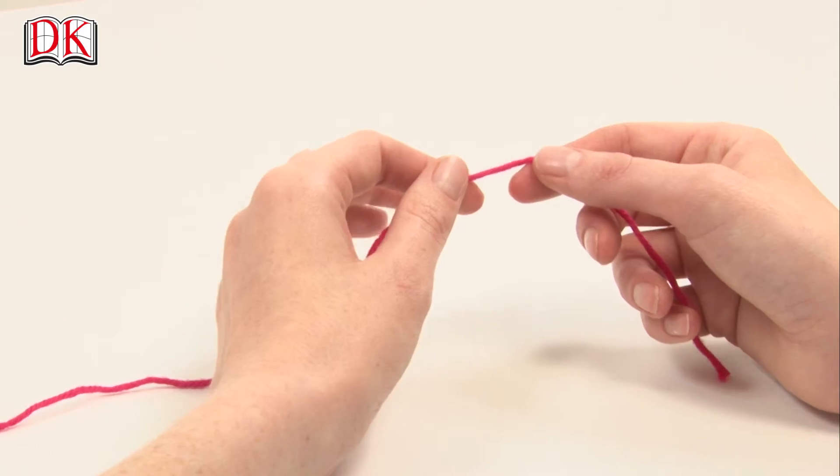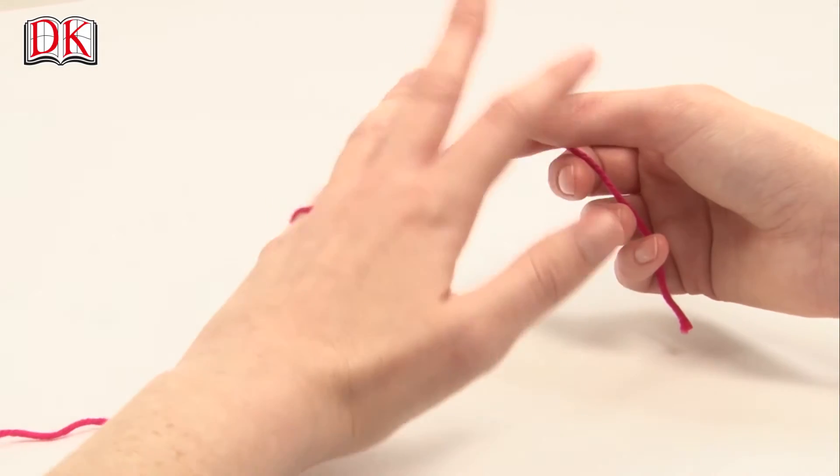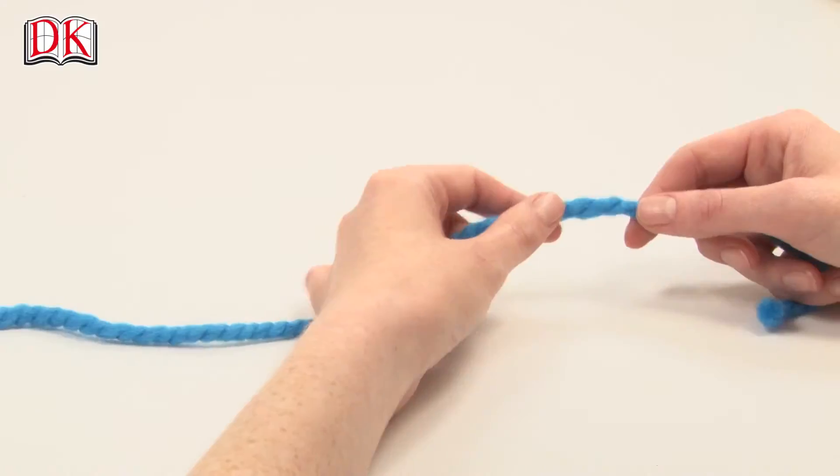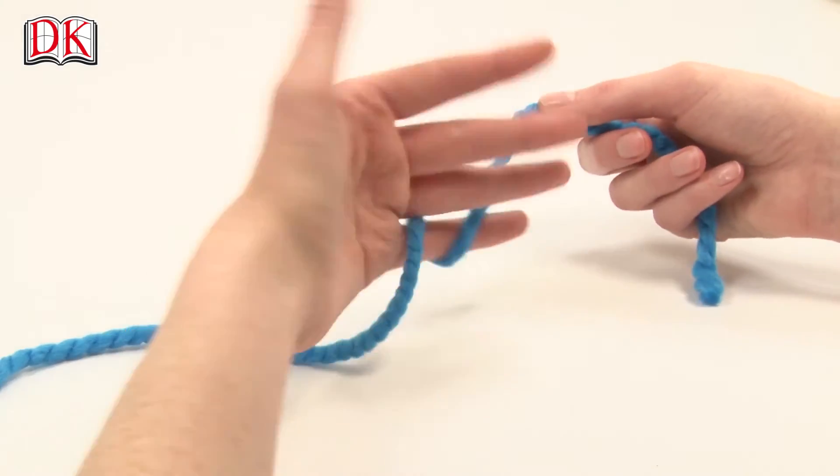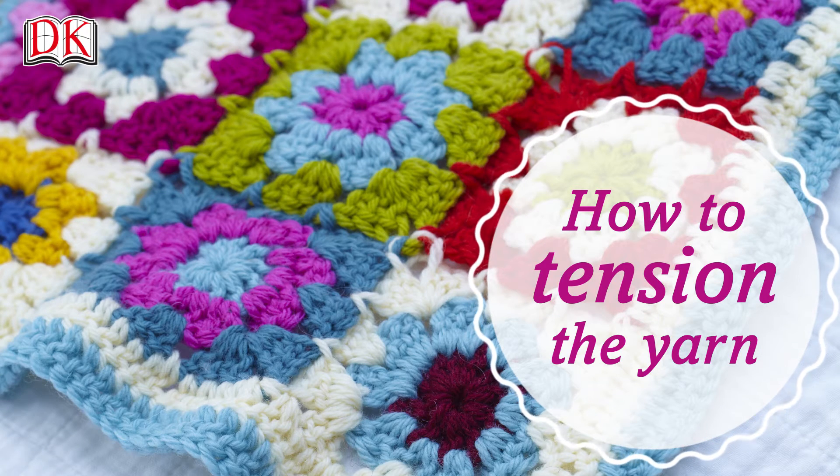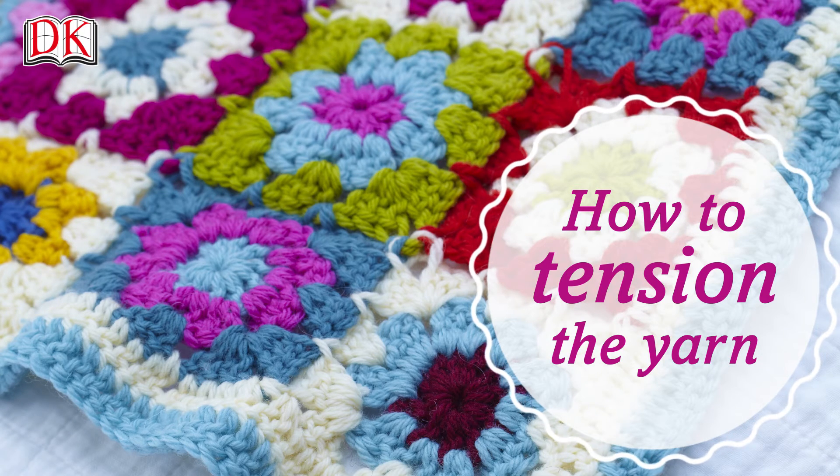Like with holding the hook, there are two technically correct ways to tension the yarn: with either the forefinger or the middle finger. But you can wrap the yarn around the rest of your fingers in whichever way you find comfortable. Here are the two most technically correct and effective ways of tensioning the yarn.